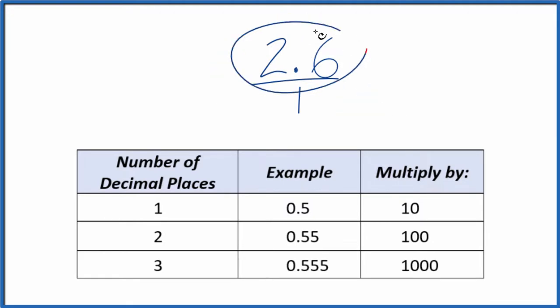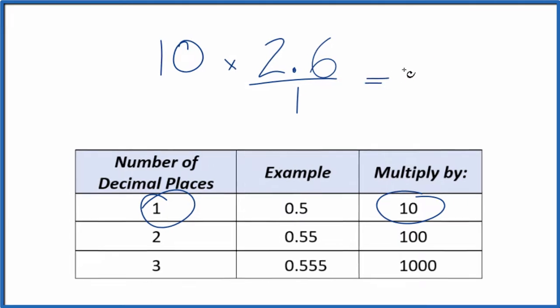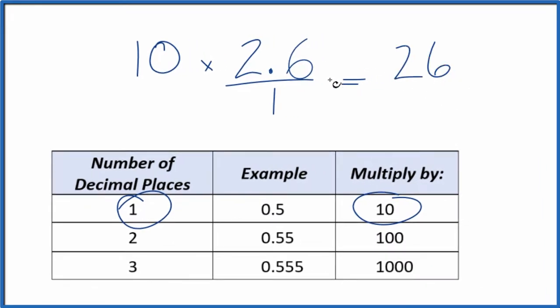We need to get this 2.6 to a whole number. To do that, I see we have one decimal place here. So with one decimal place, we're going to multiply this by 10. We take 10 times 2.6, we end up with 26. And that's our whole number.